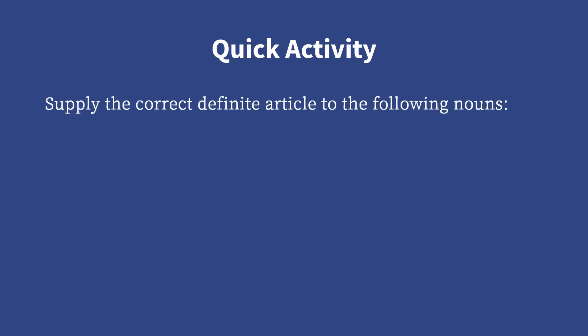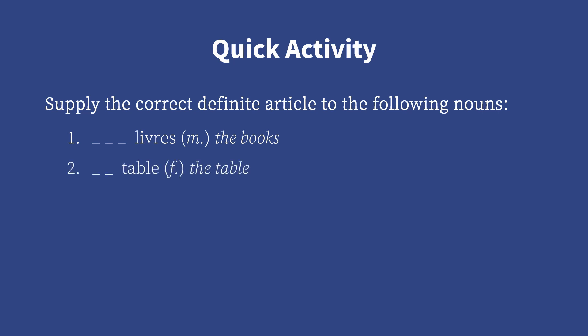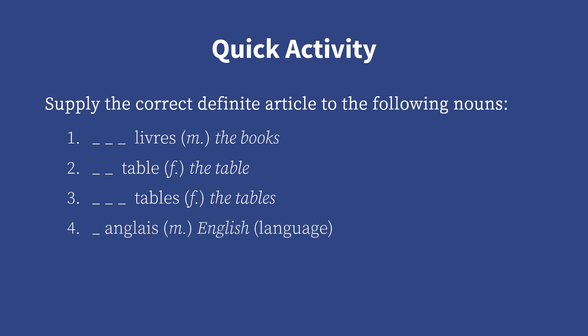To apply what we've just learned, let's have a quick activity. Write your answers in the comment section and I'll do my best to check them. Supply the correct definite articles to the following nouns: Number one — livre, the books; Number two — table, the table; Number three — tables, the tables; Number four — anglais, English; Number five — chien, the dog.